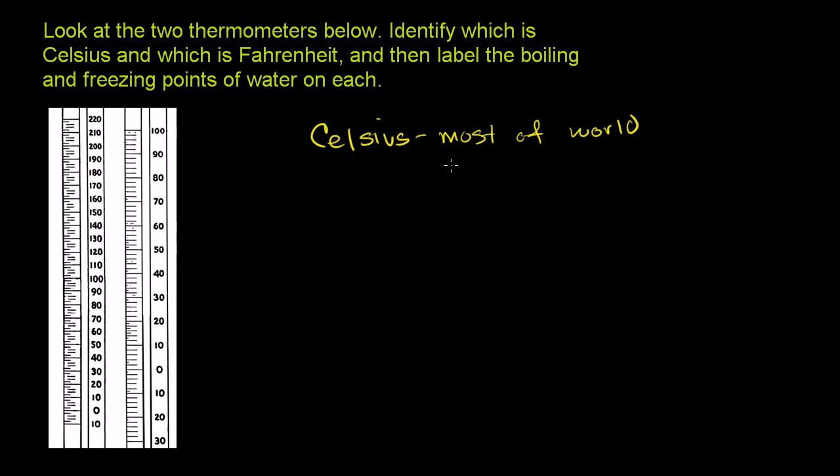The easy way to tell that you're dealing with the Celsius scale is on the Celsius scale, 0 degrees is freezing of water at standard temperature and pressure, and 100 degrees is the boiling point of water at standard temperature and pressure.